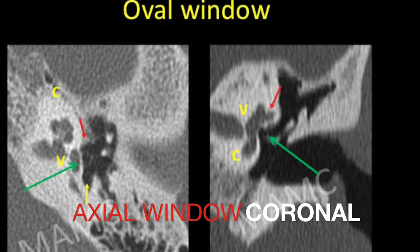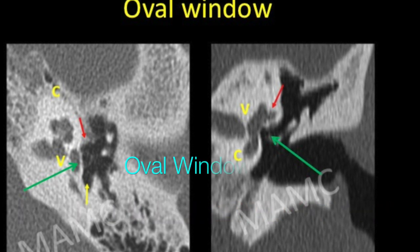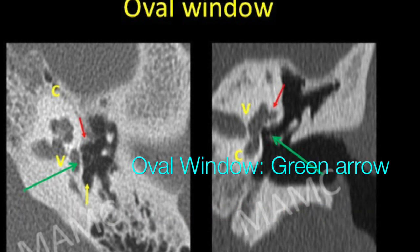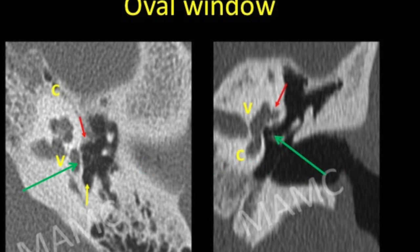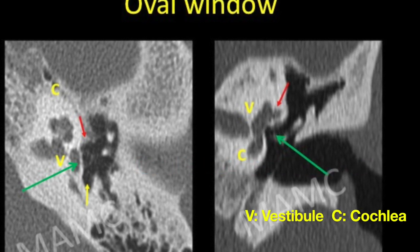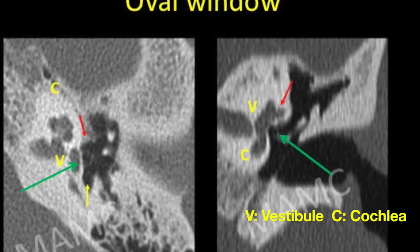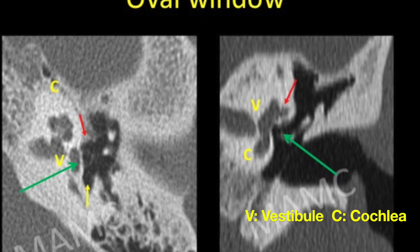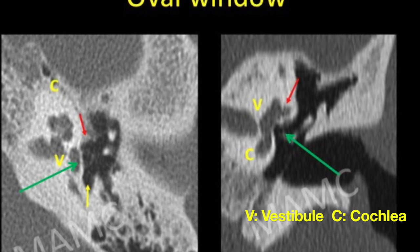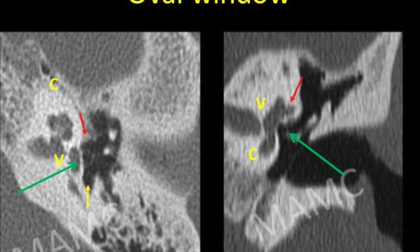Looking at the cross-sectional anatomy of these two windows, these are the axial and coronal sections demonstrating a rectangular-shaped oval window where the two crura of the stapes are seen to overlie this window. Medially lies the vestibule. Anteriorly, on the axial section, lies a part of the otic capsule between the cochlea and the vestibule, and posteriorly is the sinus tympani, marked by the yellow arrow on the axial image.